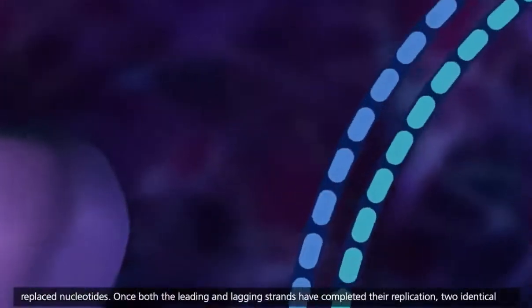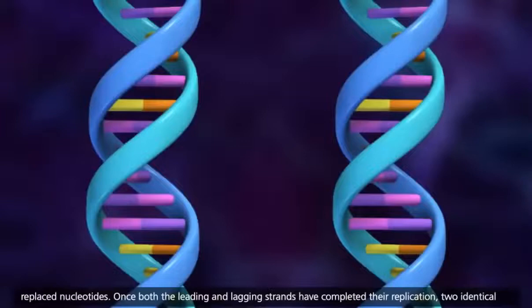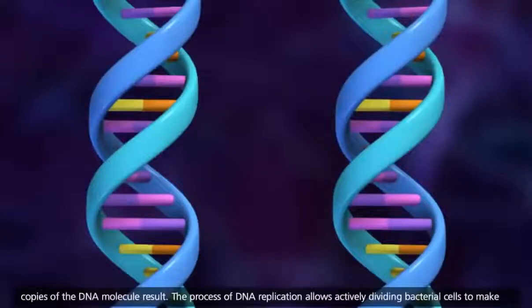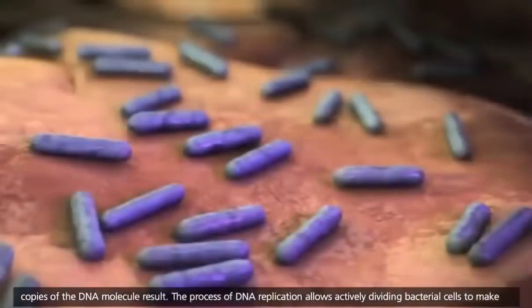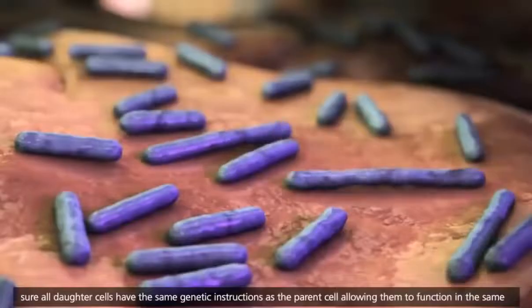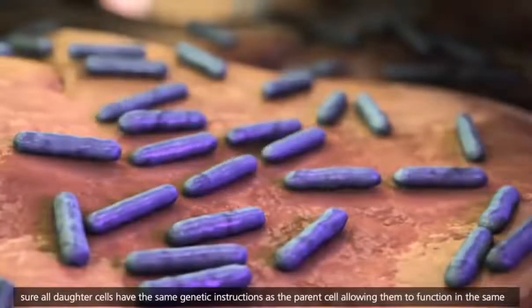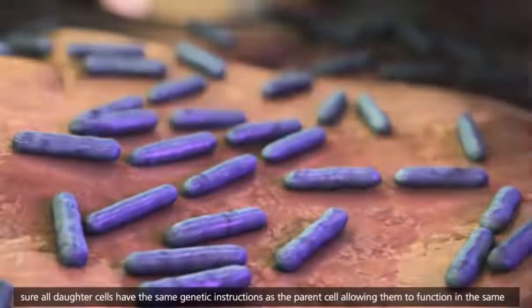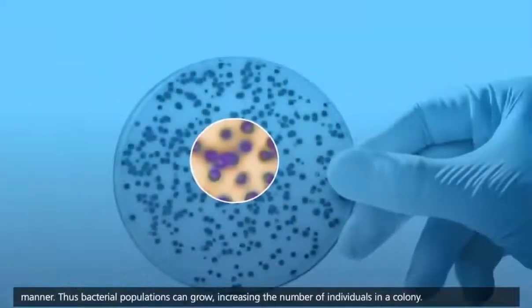Once both the leading and lagging strands have completed their replication, two identical copies of the DNA molecule result. The process of DNA replication allows actively dividing bacterial cells to ensure all daughter cells have the same genetic instructions as the parent cell, allowing them to function in the same manner.